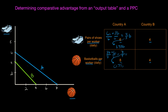I now have the opportunity costs of shoes and basketballs for country A. It's going to be a lot quicker to calculate these for country B, because country B can produce either four pairs of shoes or four basketballs, giving an opportunity cost of shoes of one basketball per pair of shoes. Likewise, for basketballs, with the resources it takes to produce four basketballs the country could have produced four pairs of shoes — divide both sides by four — giving a cost of basketballs of one pair of shoes per basketball.